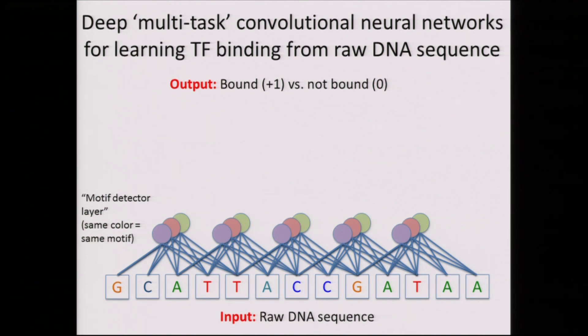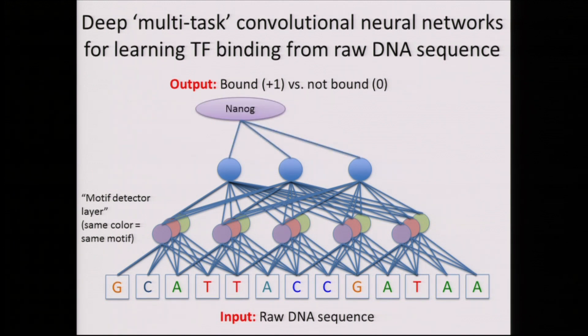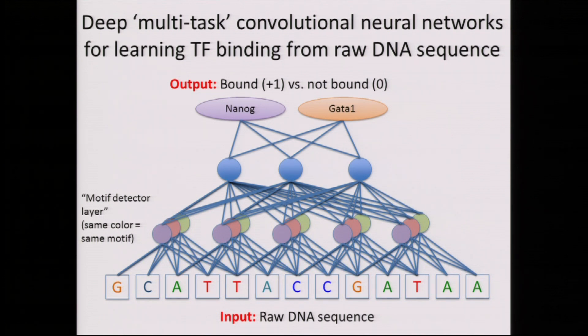At a high level, the first layer of neurons in these models is essentially acting like motif detectors — each is a separate motif detector, similar to a PWM scan but without the constraints of a PWM, which makes them more powerful. The layer after that combines the outputs of these motif detectors to pick out complicated patterns like positional grammar. By analogy to vision, these layers pick out features like eyes and noses; here they pick out grammars by combining simpler features. The outputs can be transcription factor binding, and these models work very well in multitask settings — the more tasks you have, the more powerful the models will be.